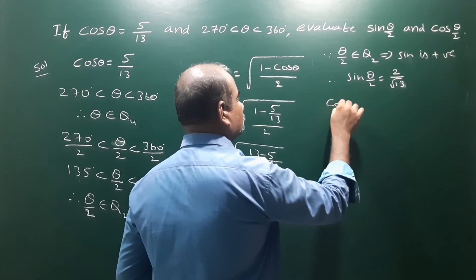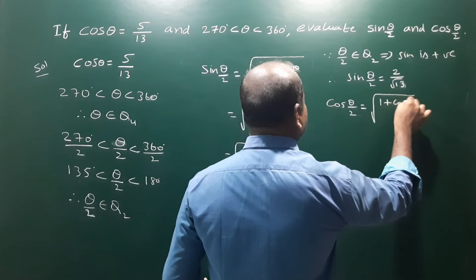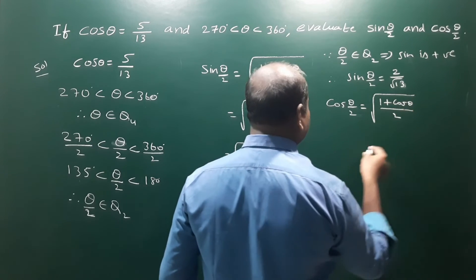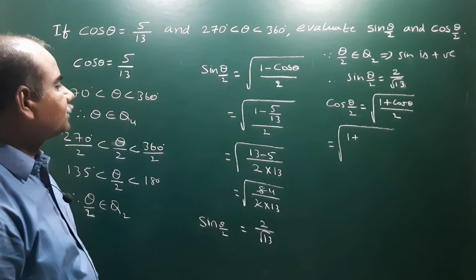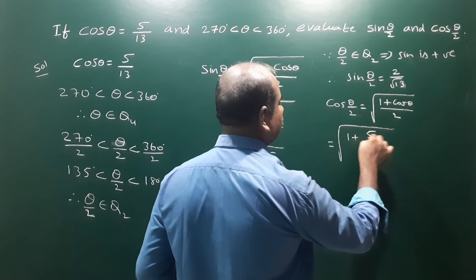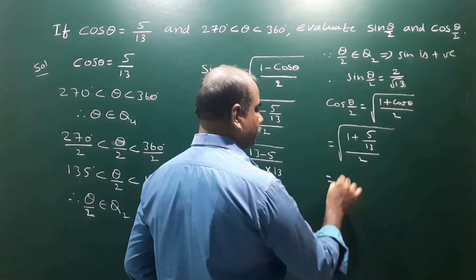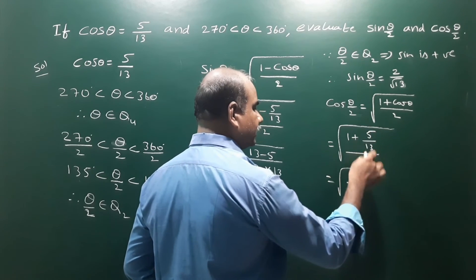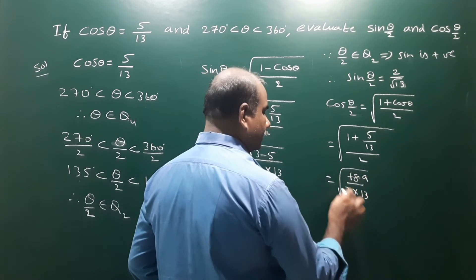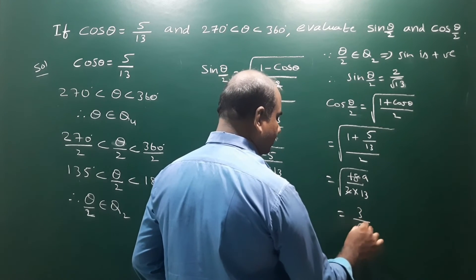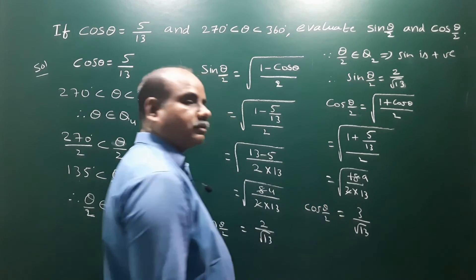Next, cos theta by 2. The formula is: square root of (1 plus cos theta) whole by 2. That is root of (1 plus 5 by 13) by 2 = root of (18 by 2 into 13) = root of (9 by 13) = 3 by root 13. This is cos theta by 2.